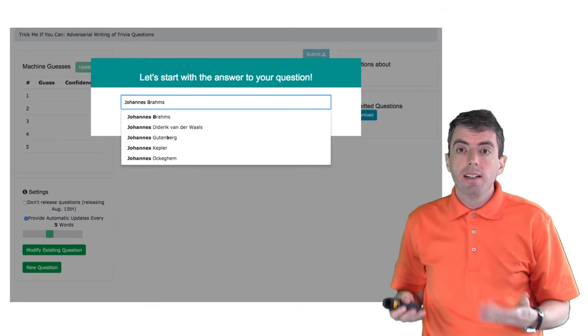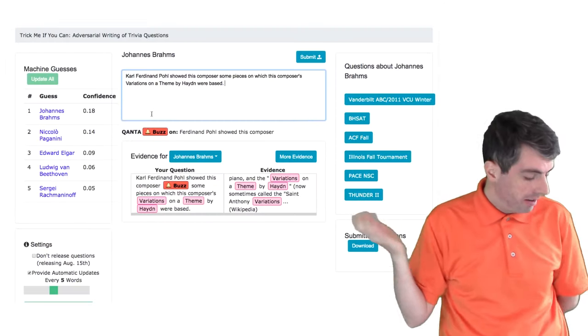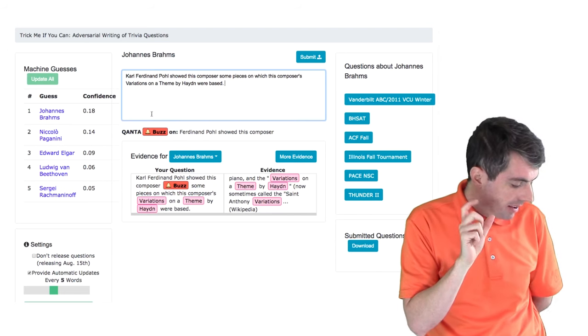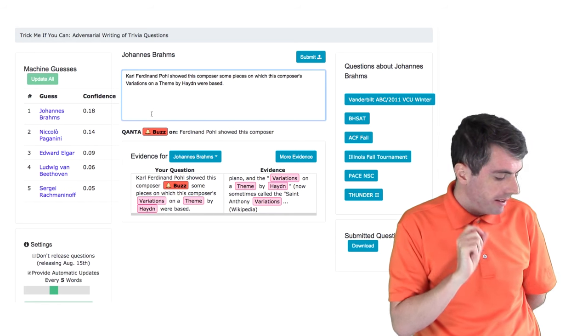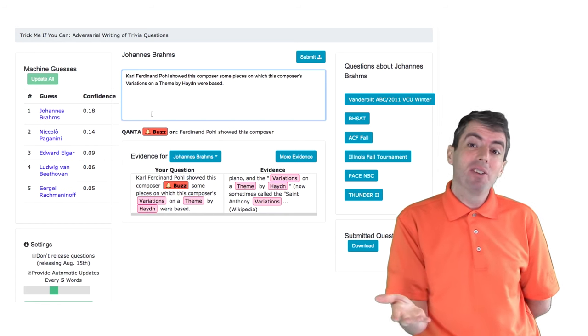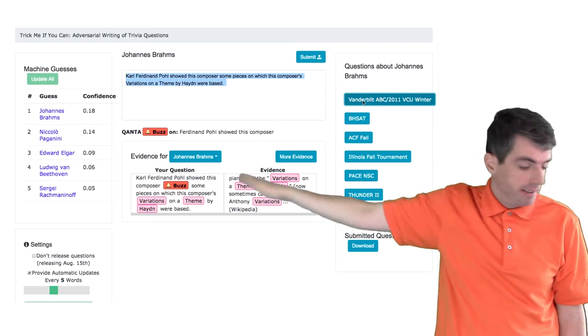I've started typing in the answer to the question that I want to write. Even though this might be a hard clue, the system has seen it before, so it's able to say that if I see the phrase Karl Friedman Kohl, then I know that the answer to this question is almost certainly going to be Johannes Brahms.